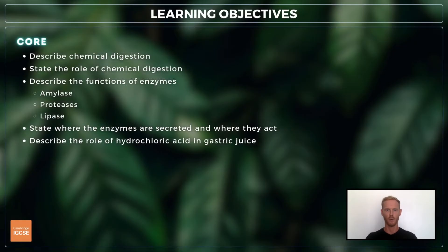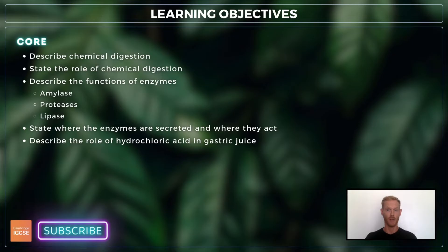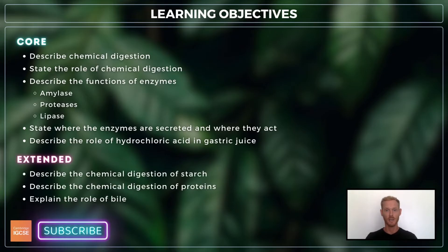For topic 7.4, you need to describe and state the role of chemical digestion, describe the functions of amylase, proteases and lipase, state where these enzymes are secreted and where they act, and describe the functions of hydrochloric acid in the stomach. For extended, you need to describe the digestion of starch and protein in more detail, and describe the role of bile in providing a suitable pH for enzyme action.